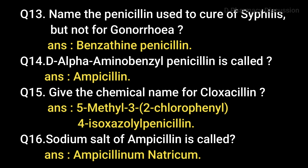Question 14: D-alpha aminobenzyl penicillin is called — answer: ampicillin. Actually, ampicillin is a white or slightly buff colored, odorless crystalline powder.